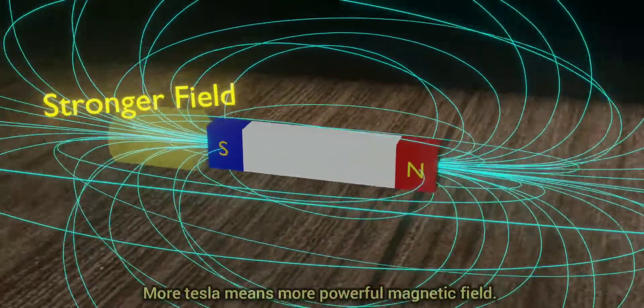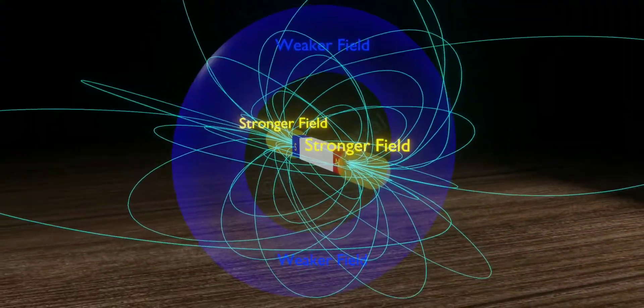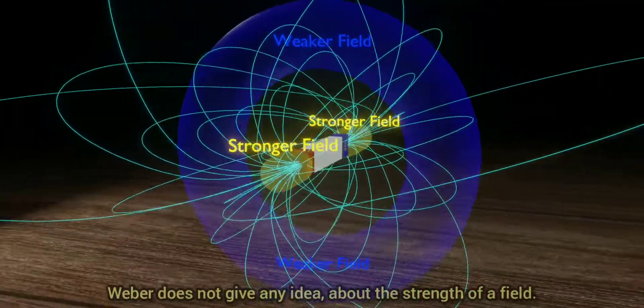More Tesla means more powerful magnetic field. Weber does not give any idea about the strength of a field.